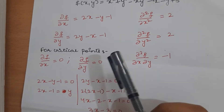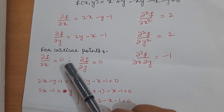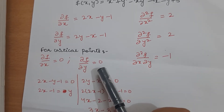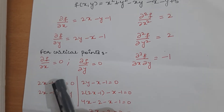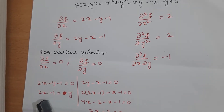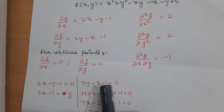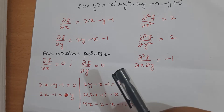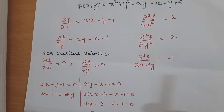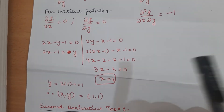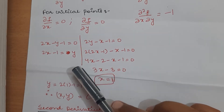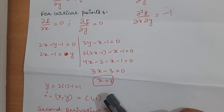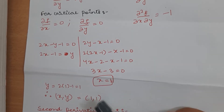Find the critical points by setting ∂f/∂x = 0 and ∂f/∂y = 0. Setting ∂f/∂x = 0 gives y = 2x − 1. Substituting this into 2y − x − 1 = 0 gives x = 1. Substituting x = 1 back gives y = 1. Therefore the critical point is (1, 1).